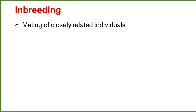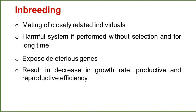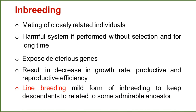Inbreeding is the method in which mating of closely related individuals is done. It is a harmful system if performed without selection and for a long time. It can expose deleterious genes and results in decreased growth rate, productive and reproductive efficiency. Line breeding is a mild form of inbreeding used to keep descendants related to some admirable ancestors.